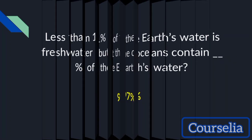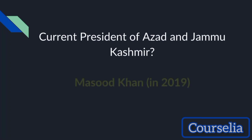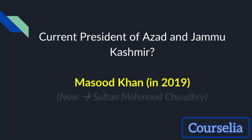The answer is 97%. The current President of Azad Jammu and Kashmir: in 2019, the President was Masood Khan. But now the President is Barrister Sultan Mehmood Chaudhry.